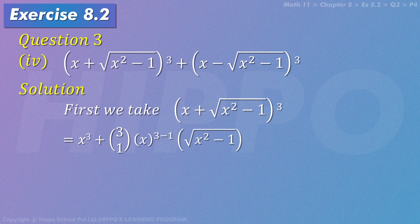We can write x³, we can write ³C₀ x³ (√(x² - 1))⁰. Why did we write this? Because ³C₀ is 1, so we don't have to write (√(x² - 1))⁰. So here we have only x³ plus start: we have here x^(3-1) √(x² - 1).